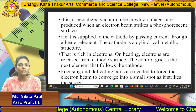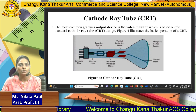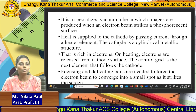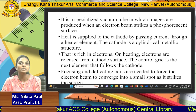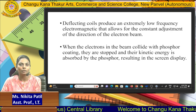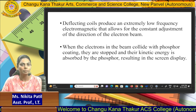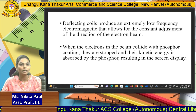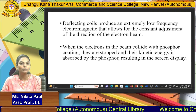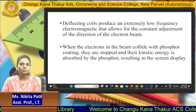Electrons are emitted from the cathode surface both horizontally and vertically. Focusing and deflecting coils direct the electron beam to converge into a small spot as it strikes the screen. The deflecting coils produce extremely low-frequency electromagnetic fields that allow constant adjustment of the electron beam direction. When the beam hits the phosphor coating, kinetic energy is absorbed and the screen displays the image.